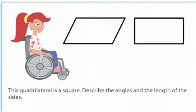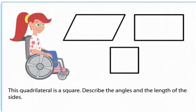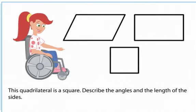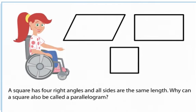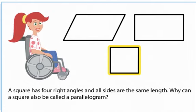This quadrilateral is a square. Describe the angles and the length of the sides. A square has four right angles and all sides are the same length. Why can a square also be called a parallelogram?